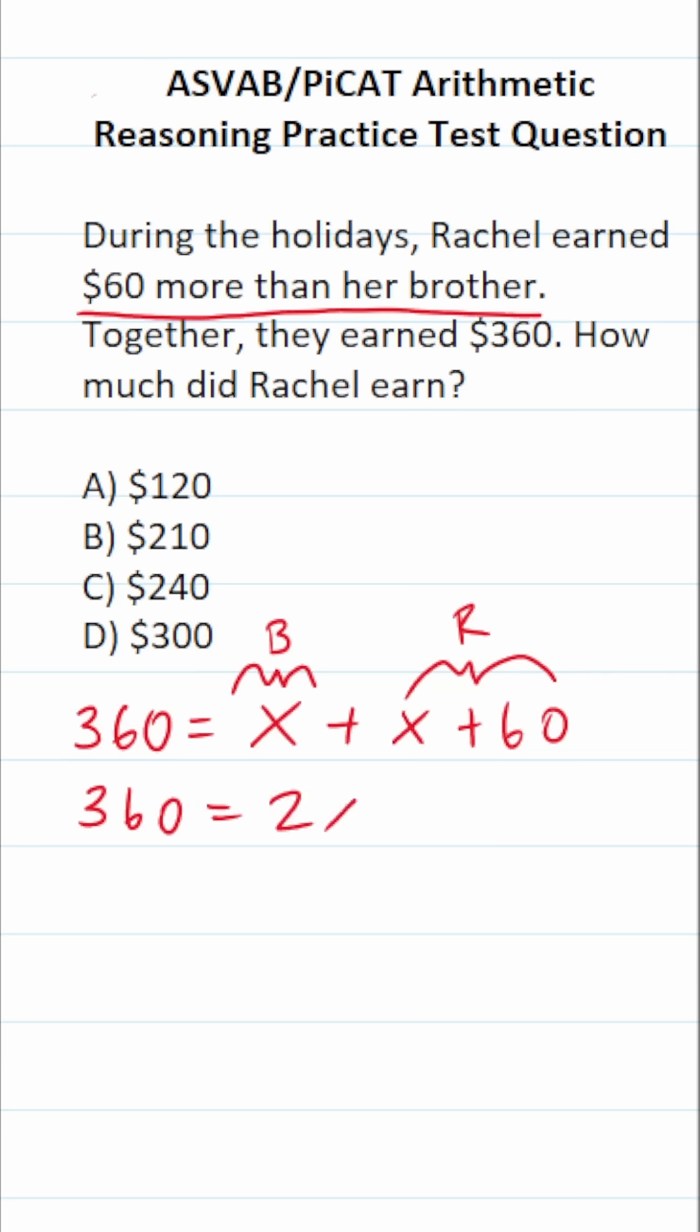X plus X is going to be 2X. So this is 2X plus 60. Let's subtract 60 from both sides so we can get 2X by itself. This crosses out, leaving you with 2X over here. 360 minus 60 is going to be 300. Again, to get X by itself...